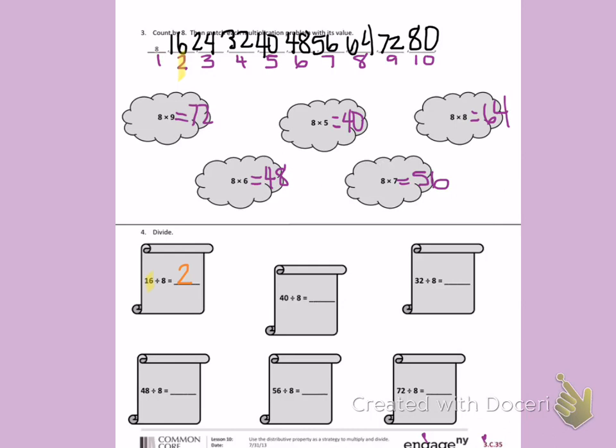Next, I have 40 divided by 8. I look at 40 in my count by, underneath is 5. 40 divided by 8 is 5.